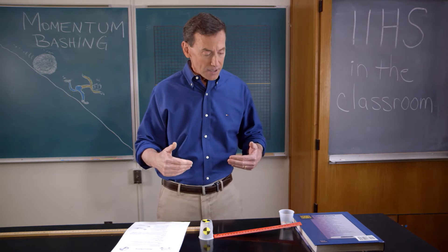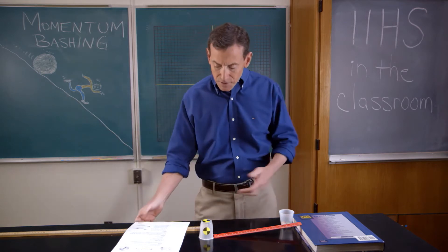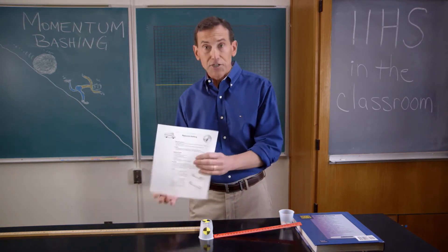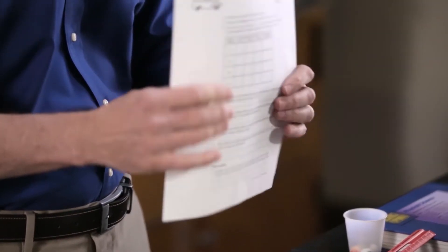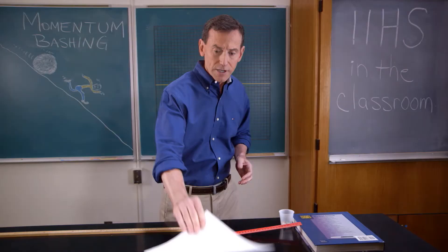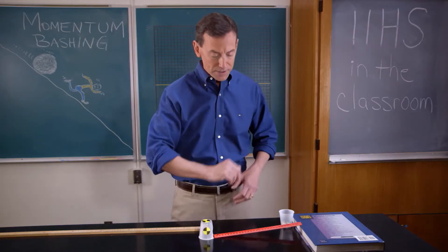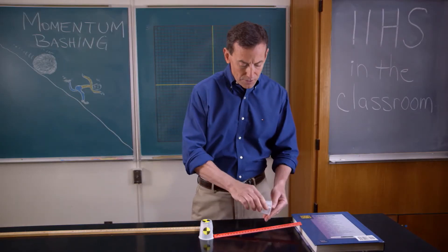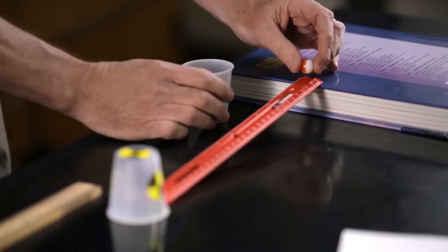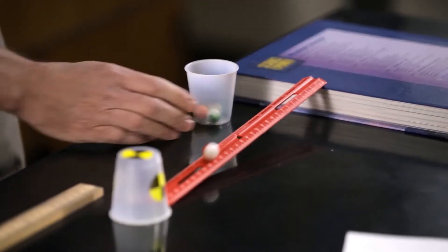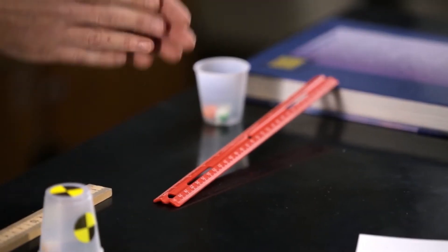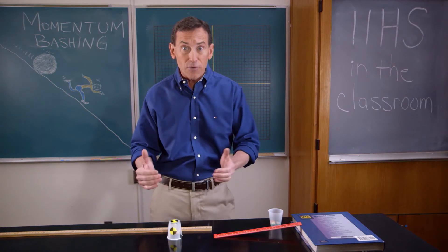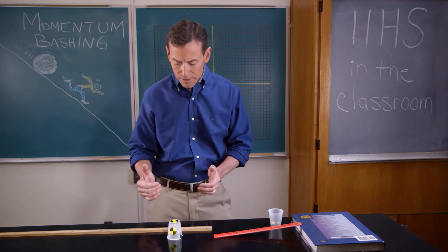Let's take a look at your setup. It should look something like this. Make sure you have your activity sheet with your data table to record your measurements. When a marble rolls down and hits the cup, it's going to move that cup outward as a way of us indirectly measuring the momentum.